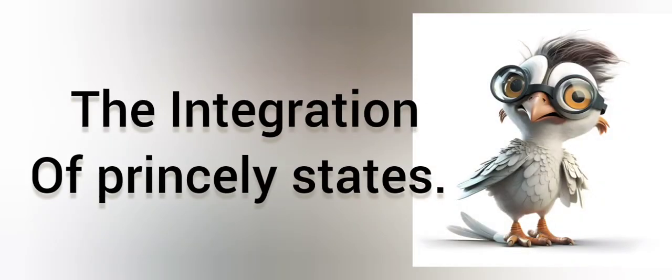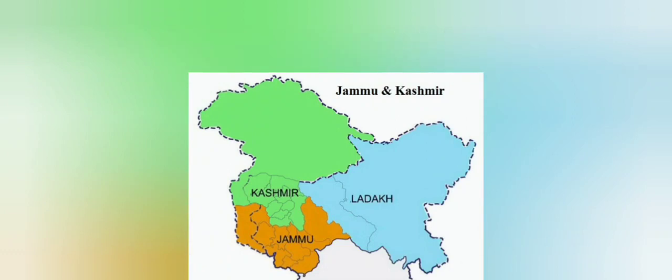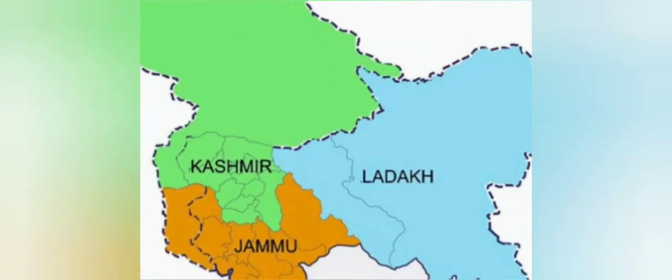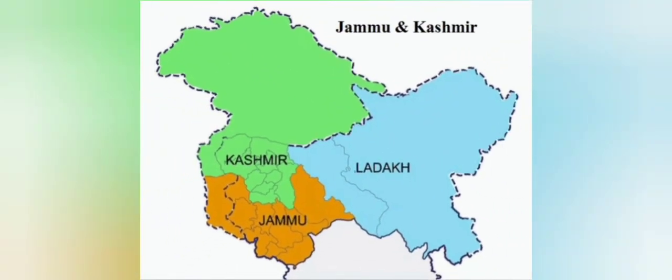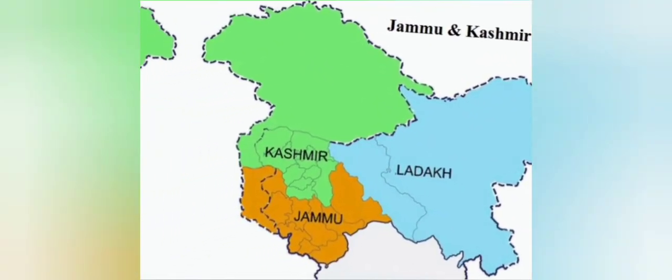This chapter is The Integration of Princely States, A Case Study of Jammu and Kashmir. In this case, we have to see how the integration happened — that means how many small parts, which we call princely states, fit together. And Jammu and Kashmir was one such part. We will learn about it in detail.